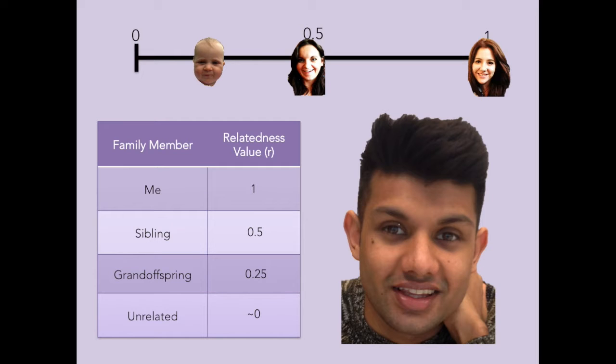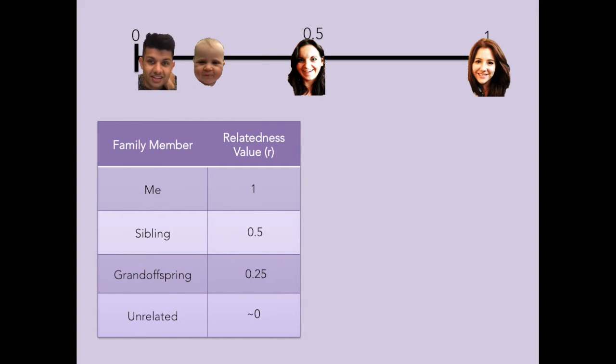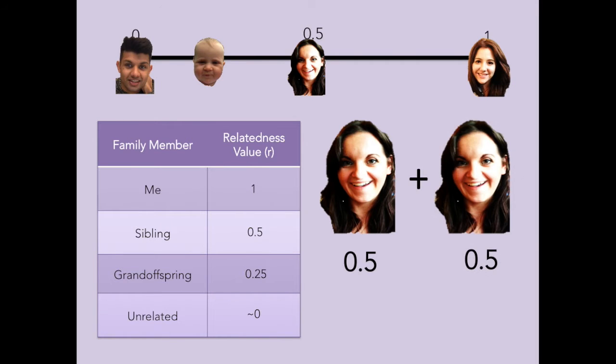If I'm completely unrelated to someone, I share hardly any genes with them, and so their relatedness value is roughly 0. If I save two of my siblings, it would be just as good as saving myself because I break even, genetically speaking. So when I'm helping my relatives, I'm actually helping my own genes survive on into the next generation.